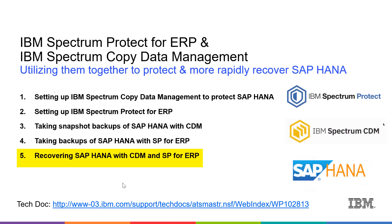Welcome to this fifth video in this series on using IBM Spectrum Protect for ERP and IBM Spectrum Copy Data Management to protect and more rapidly restore and recover SAP HANA. In this video we're going to look at how we can use the Copy Data Management snapshot to rapidly restore the SAP HANA database, and then use the Spectrum Protect for ERP redo logs to recover the SAP HANA database to its most recent state. Do check out the TechDoc, which will talk about this in depth.